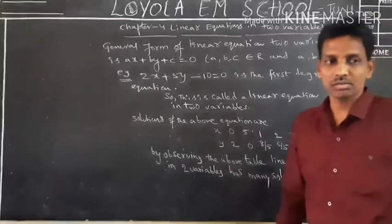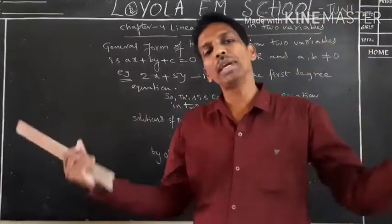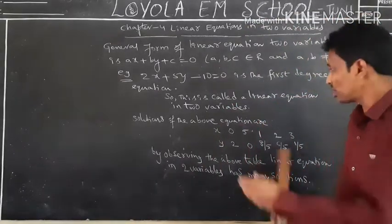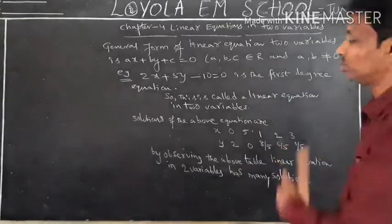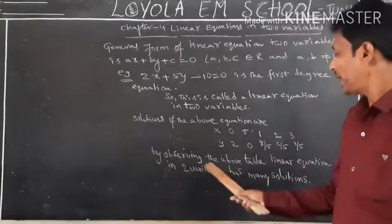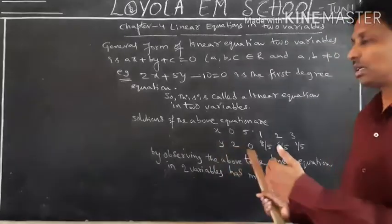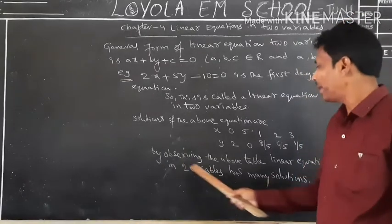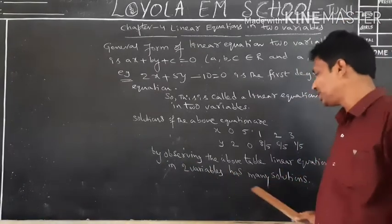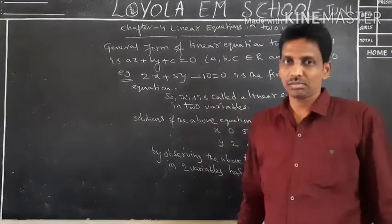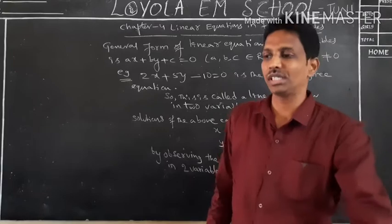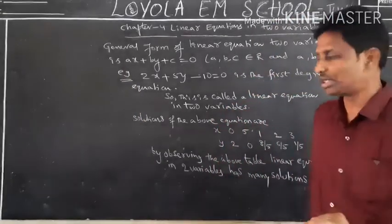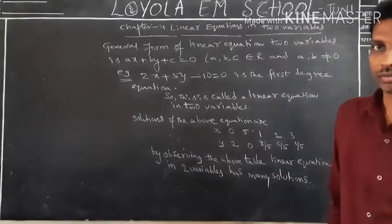These are my values — you might have substituted some other values and get different results. Due to lack of space, I did not show a graph here. But by substituting these values and plotting on a graph, we get a straight line. By observing the table, a linear equation in two variables has many solutions — not just one, two, three, or a limited number.